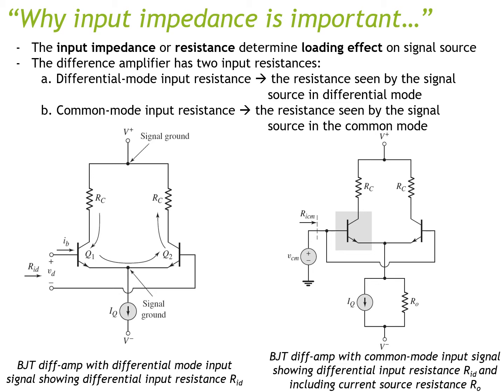The first type is differential mode input resistance — the resistance seen by the signal source when your differential amplifier is in differential mode. The second type is common mode input resistance — the resistance seen by the signal source when your amplifier is in common mode. I'll give a couple of circuit examples here and we'll go into detail shortly.